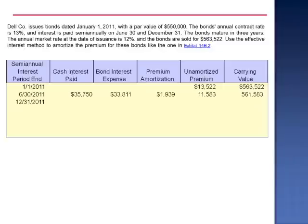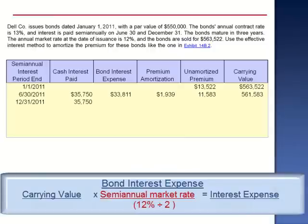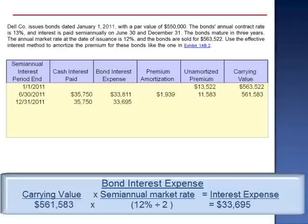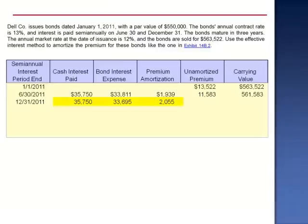December 31, 2011: the cash interest paid is constant, $35,750. Bond interest expense is not a constant dollar amount, but it is a constant rate, equal to 6% — the semi-annual market rate — of the carrying value. $561,583 multiplied by 6% is $33,695. This represents an amortization of $2,055: $35,750 minus $33,695. We amortized the premium by $2,055, dropping the unamortized premium to $9,528.